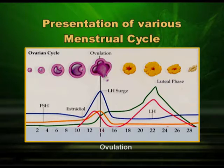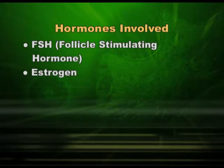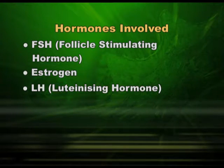We have now reached the Graafian follicle, which is ready to ovulate at mid-cycle. Once ovulation takes place, the ovum is released and the Graafian follicle is converted to the corpus luteum — that is, the Graafian follicle minus the ovum. The corpus luteum is a temporary endocrine gland and the source of the second female sex hormone, progesterone. I would also like to mention one more hormone: LH, or luteinizing hormone, from the anterior pituitary.